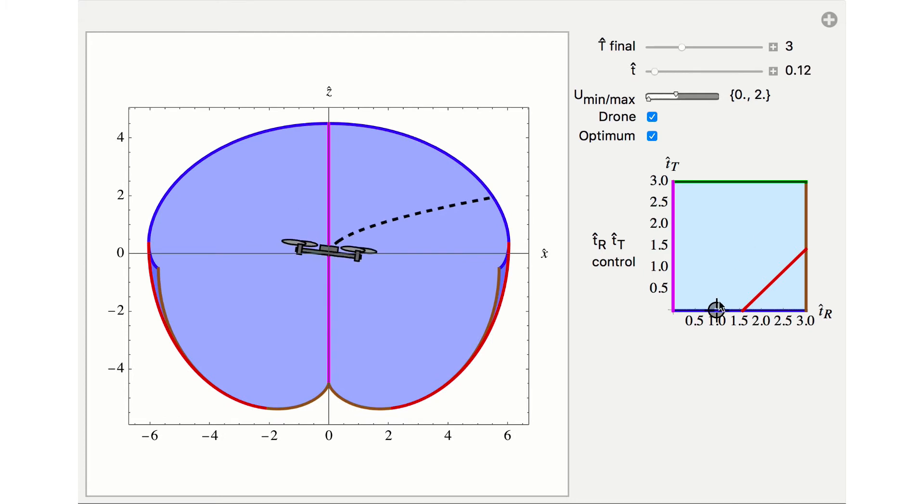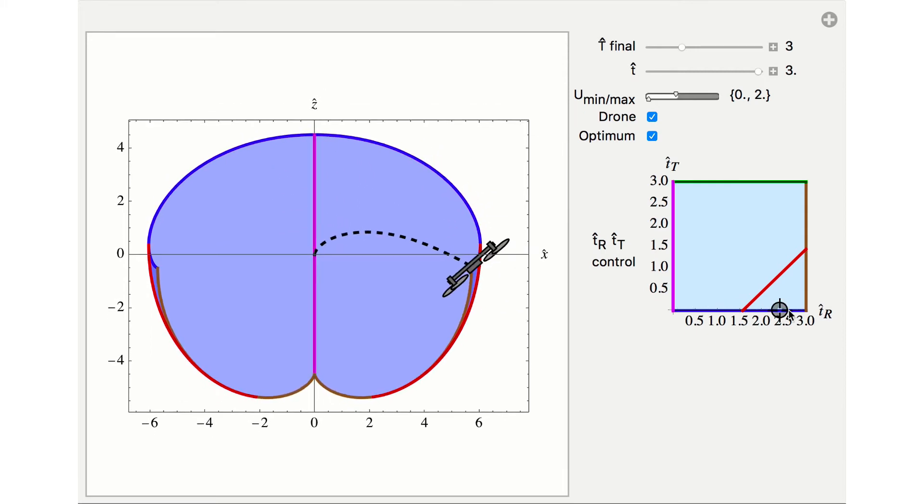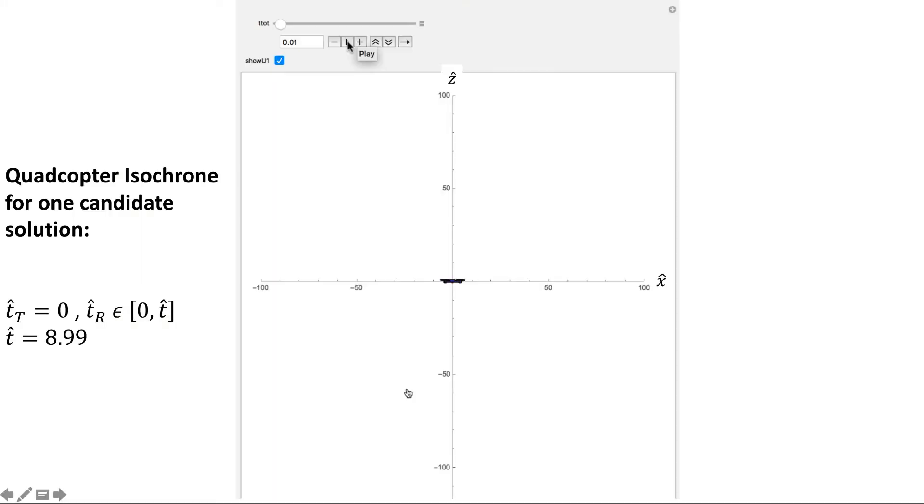The candidate optimal control inputs are always either turning at the maximum rate or flying straight, which means that the UR input is always either 1, negative 1, or 0. The optimal thrust inputs are always either full or minimum thrust.